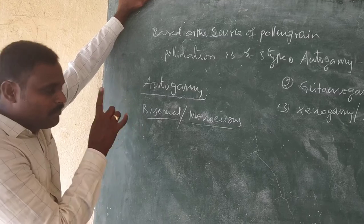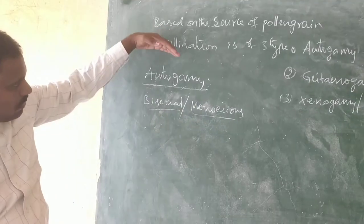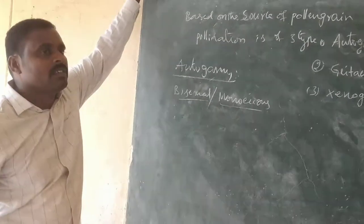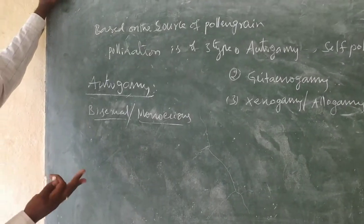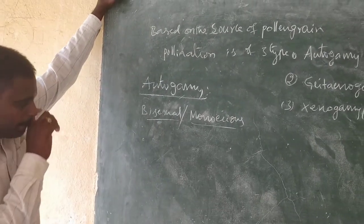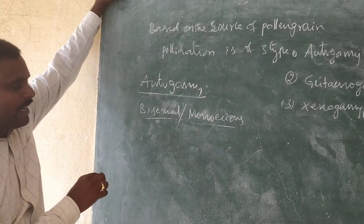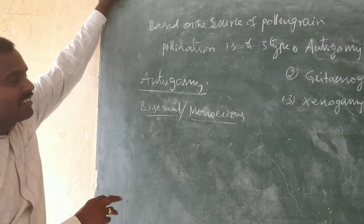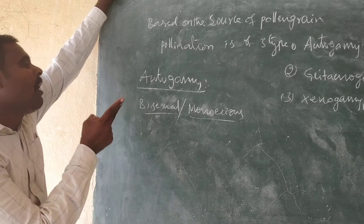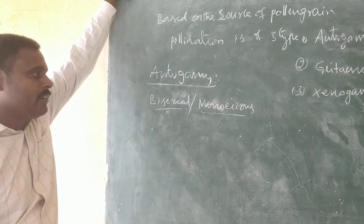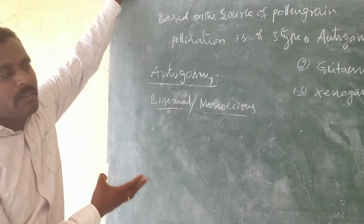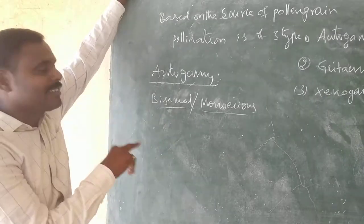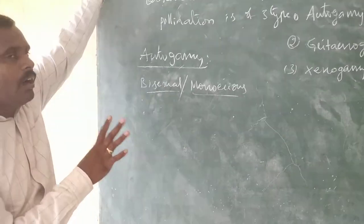The majority of bisexual plants exhibit autogamy. In some bisexual plants, both the male and female reproductive organs mature at the same time — they show synchrony — and as a result they facilitate self-pollination or autogamy.